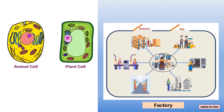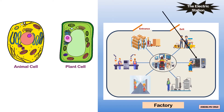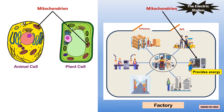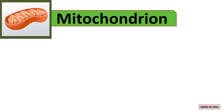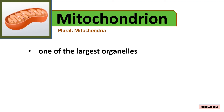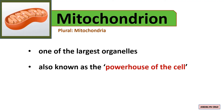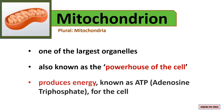The factory cannot operate without energy. The electric station represents the mitochondrion — it provides energy for the factory to continue to operate. The mitochondrion is one of the largest organelles, also known as the powerhouse of the cell. It produces energy known as ATP, or adenosine triphosphate, for the cell.